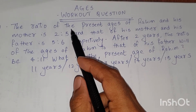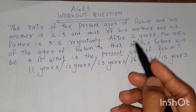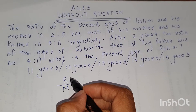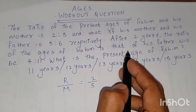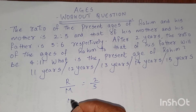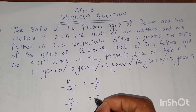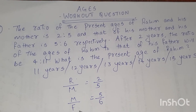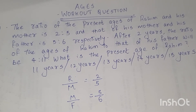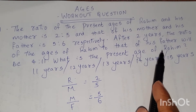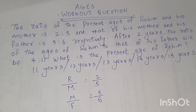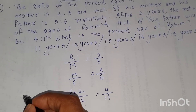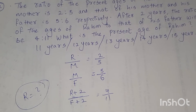Going to the second workout question. It is given that the ratio of the present ages of Rahim and his mother — let the present age of Rahim be R and the present age of his mother be M. The ratio of the present ages of Rahim and his mother is 2 by 5, and that of his mother and his father is 5 by 6 respectively. After 2 years, the ratio of the ages of Rahim to that of his father — R plus 2 divided by F plus 2 — will be 4 is to 11. You have to find out the present age of Rahim.